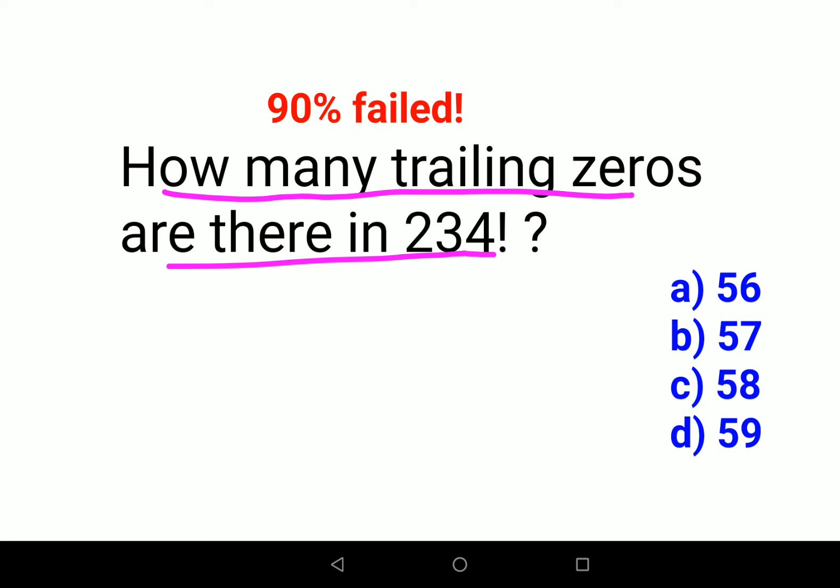Please understand this means that whenever you find 234 factorial, at the end how many zeros are going to be there? Now in this kind of scenario, there is a very simple trick that needs to be followed.